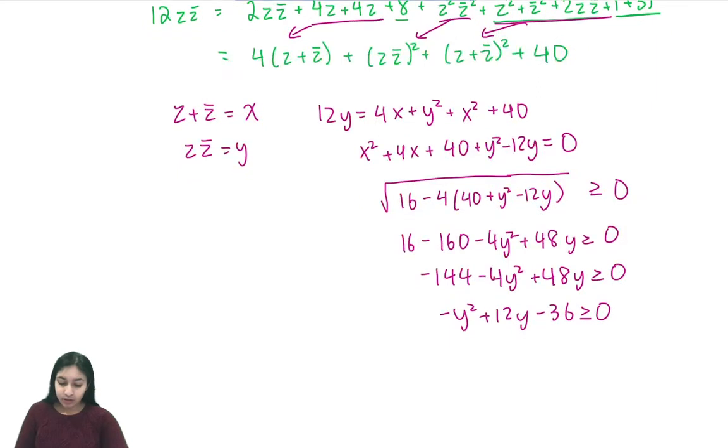And we can move this to the other side of our expression to get y squared minus 12y plus 36 is less than or equal to zero. This you may notice is just (y minus 6) squared is less than or equal to zero. So from here we know that all squares are greater than or equal to zero, so the only way that this equation has a solution is if y equals 6.